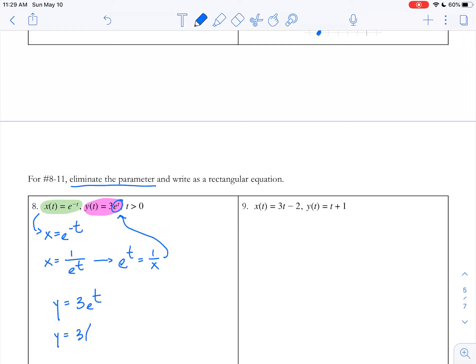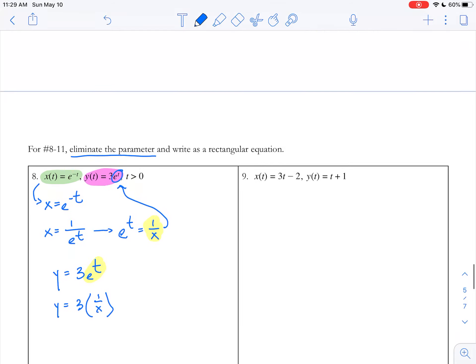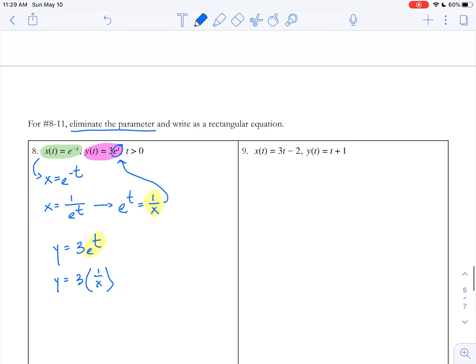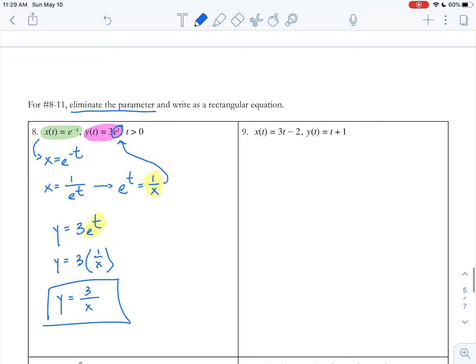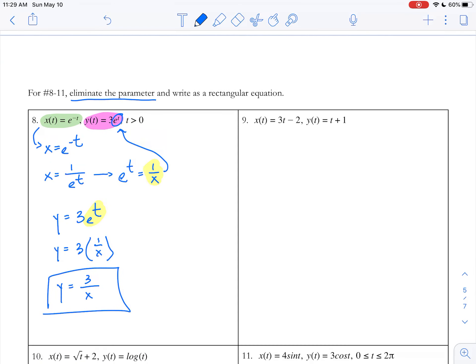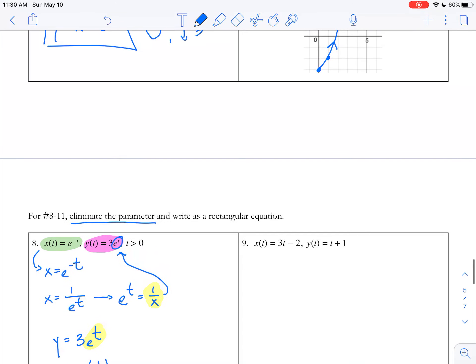Now I can take this 1/x and plug it into the y equation. So y = 3e^t, or y = 3(1/x), which simplifies to y = 3/x. There is our rectangular equation after we eliminated the parameter.